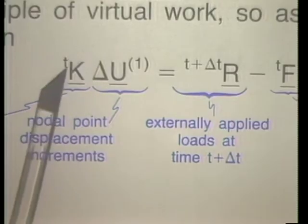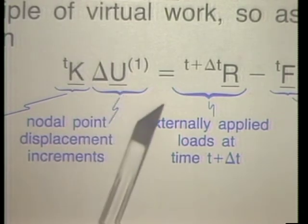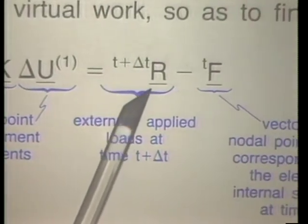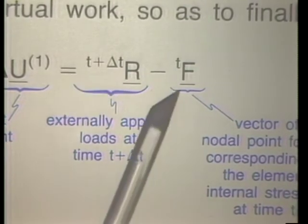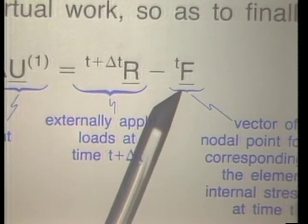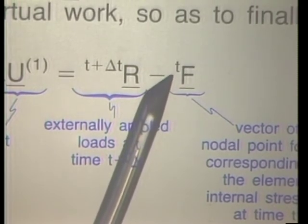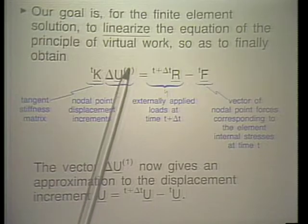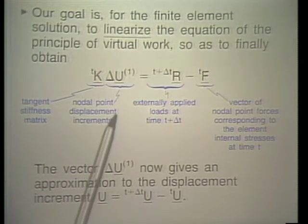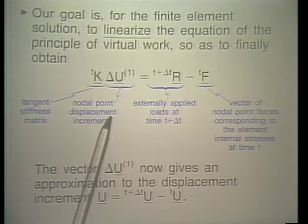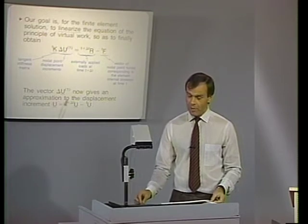These finite element equations read as follows: a tangent stiffness matrix times an incremental displacement vector equals, on the right-hand side, a load vector of nodal point forces corresponding to the externally applied loads at time t plus delta t, minus a nodal point force vector equivalent to the current element stresses at time t. This incremental displacement vector is added to the displacements known at time t to give a first estimate of the displacement solution at time t plus delta t.